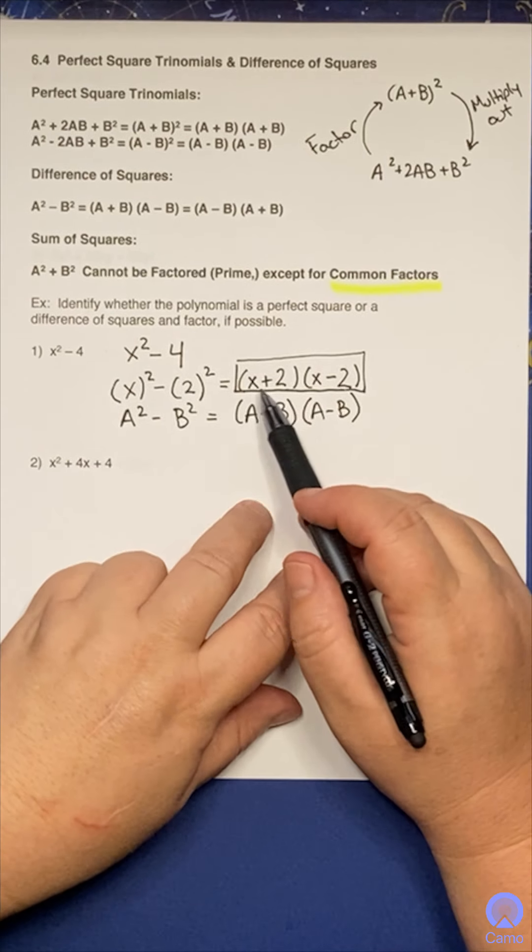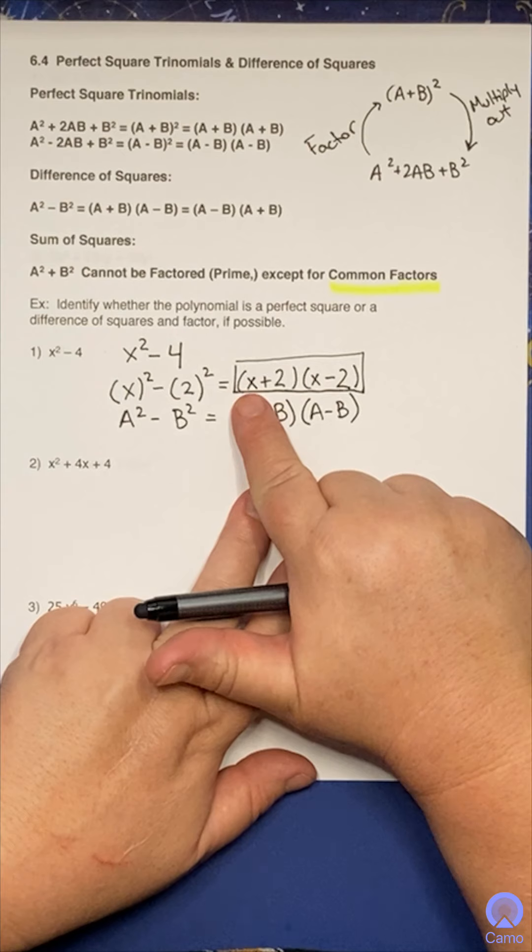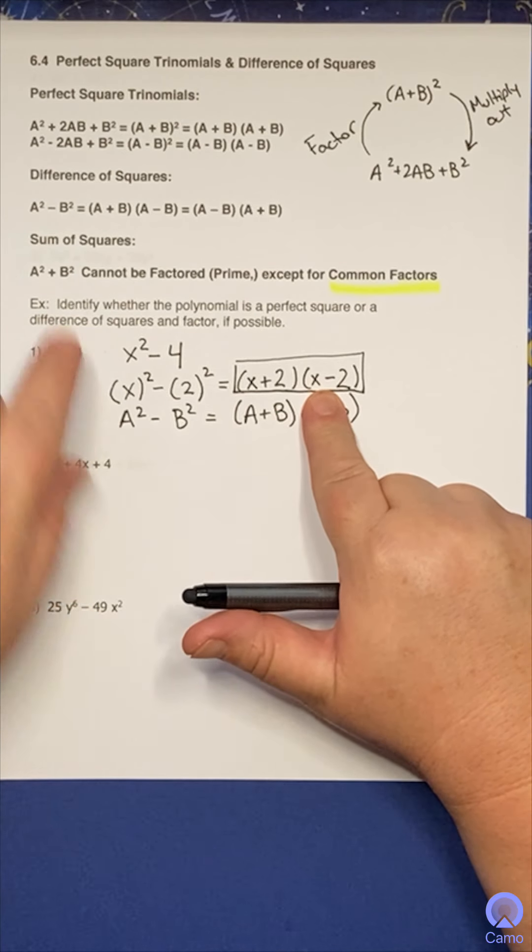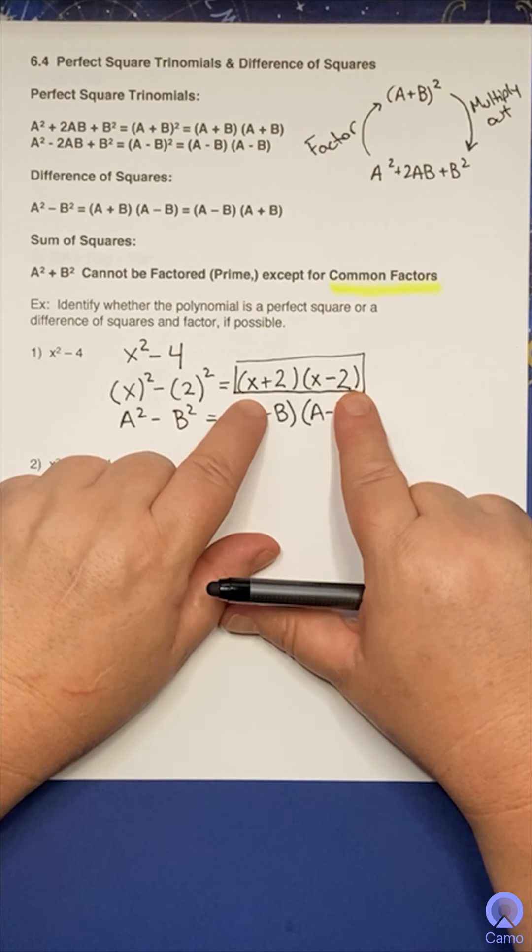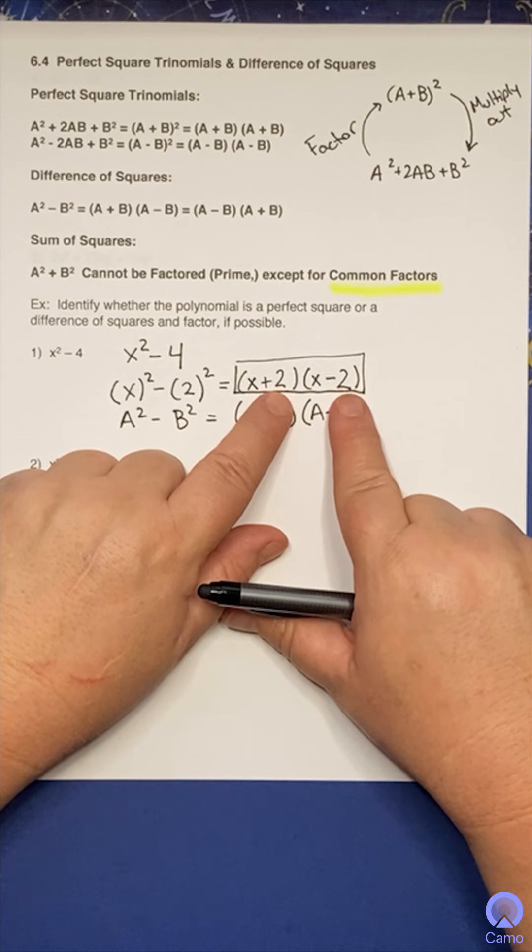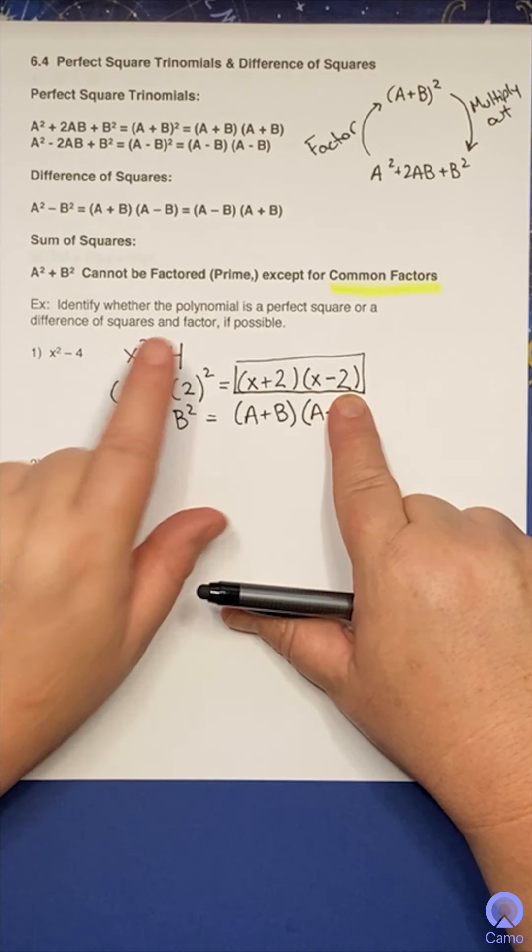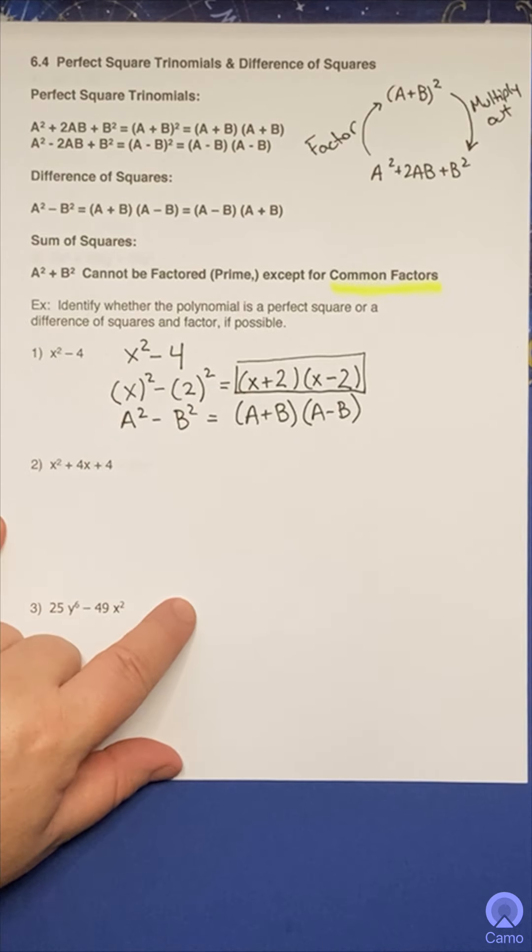Now, how can you check? Well, you could foil this out. You could actually multiply first X times X. That's X squared. Then outer minus two X, then inner plus two X. Those are going to cancel. And then plus two times negative two, negative four. That's where that comes from. So you could foil this out to double check. Okay. Shall we do another one? Promise no more singing.